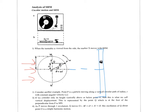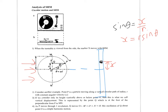To derive the equation, we measure the displacement x of the shadow from the equilibrium. On the circle, if this angle is theta and the radius is r, then sinθ = opposite/hypotenuse = x/r, giving us x = r sinθ. The radius r is also the amplitude x₀ of the simple harmonic motion.